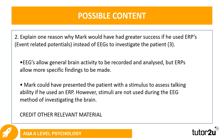Here are some possible suggestions from the mark scheme. First, consider why an ERP might be more effective than an EEG in this situation. A simple starting point: EEGs allow general brain activity to be recorded and analysed, but ERPs allow more specific findings to be made. This distinguishes between the two and considers when an ERP might be more successful. But remember, you've been given a scenario, so you need to relate it back. Mark could have presented the patient with a stimulus to assess talking ability if he used an ERP; however, stimuli are not used during the EEG method.